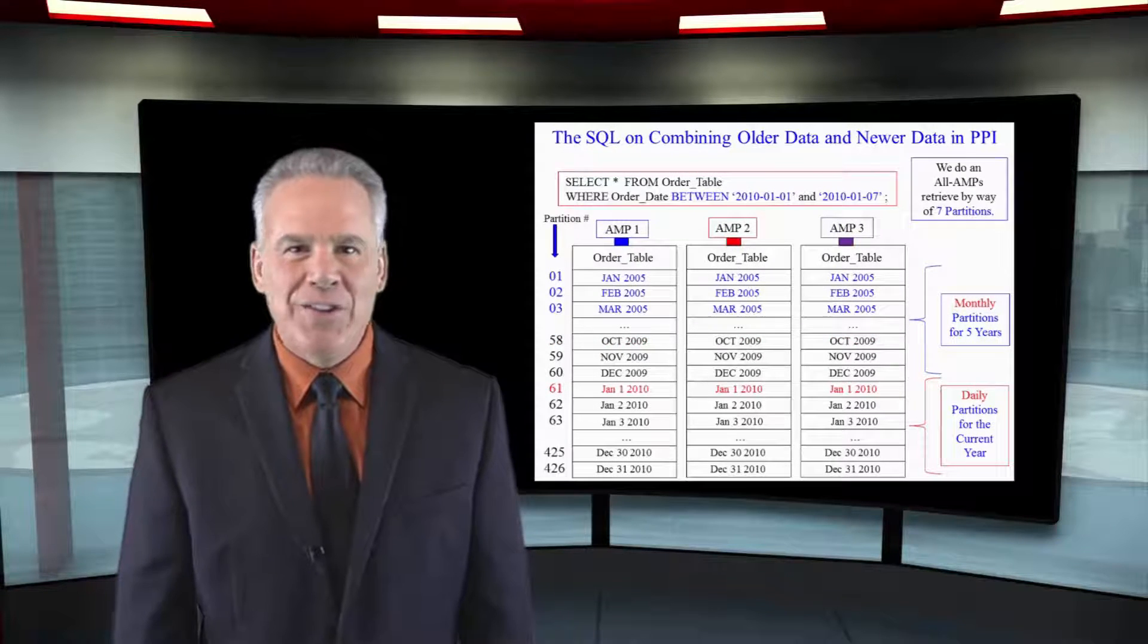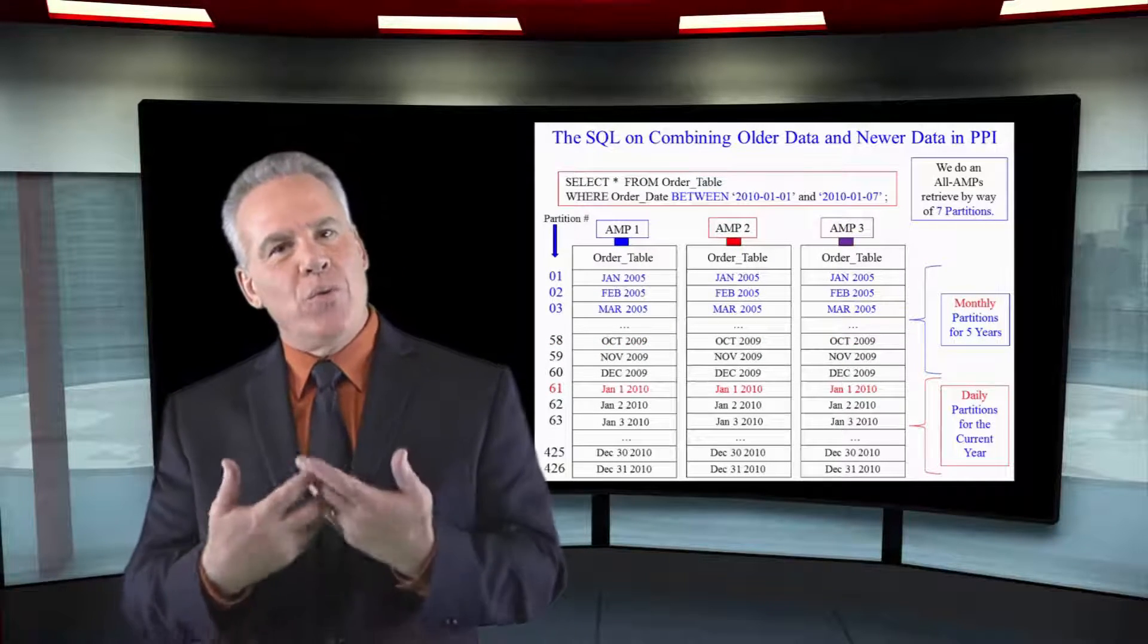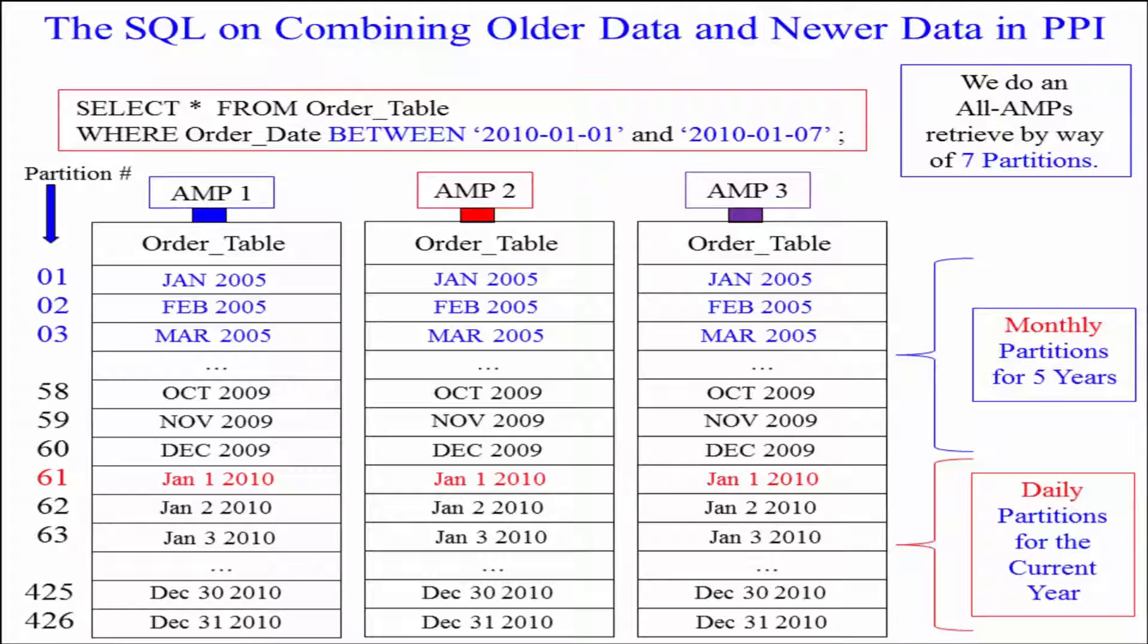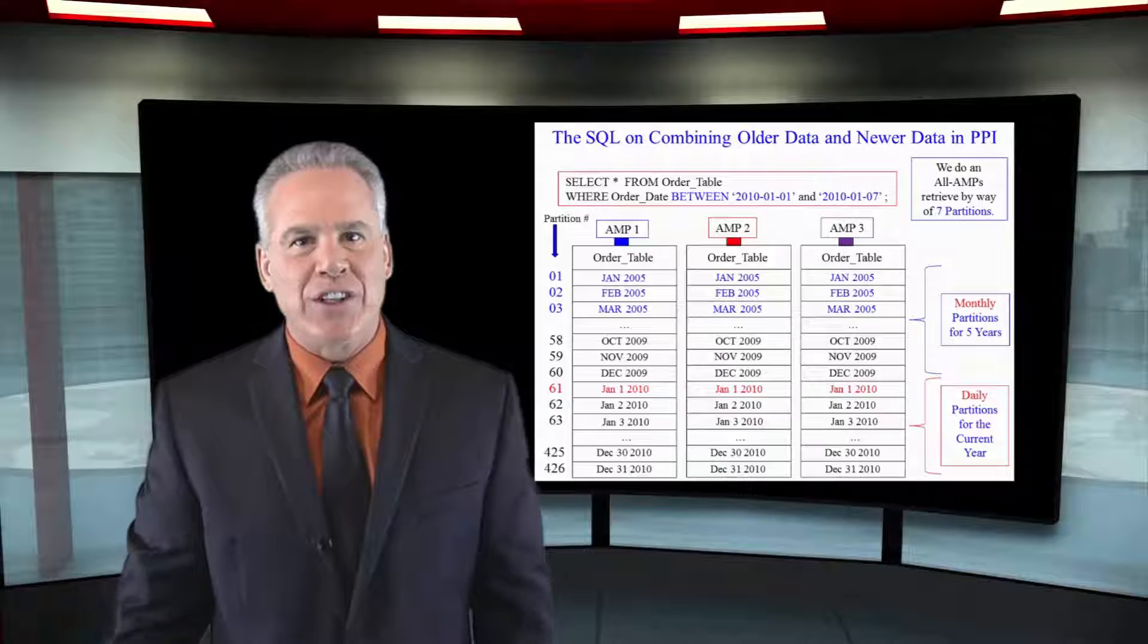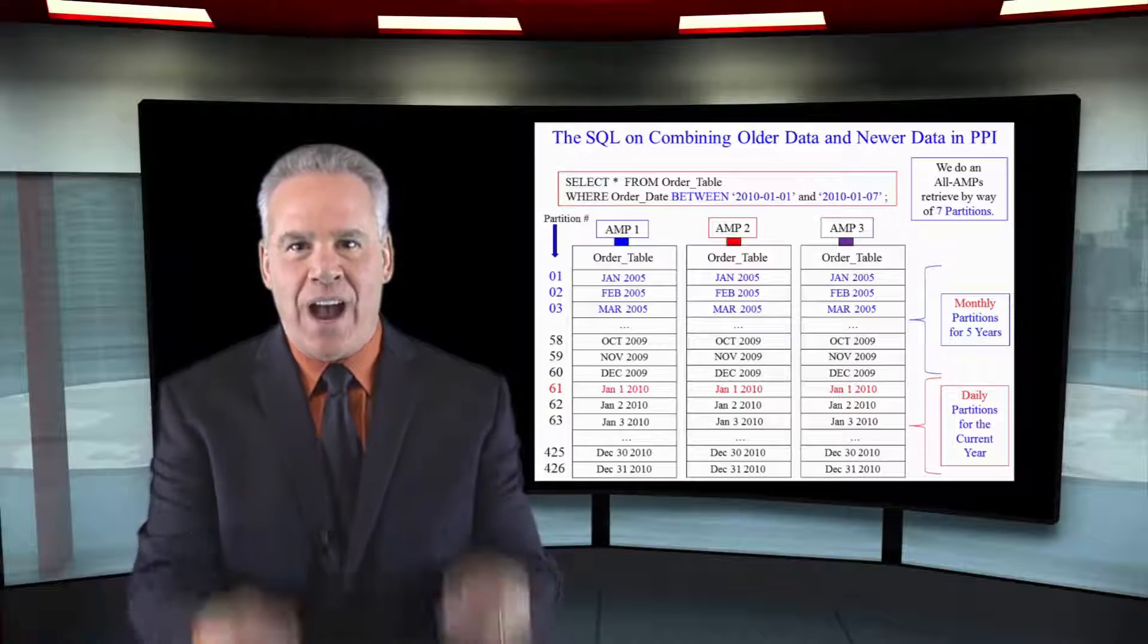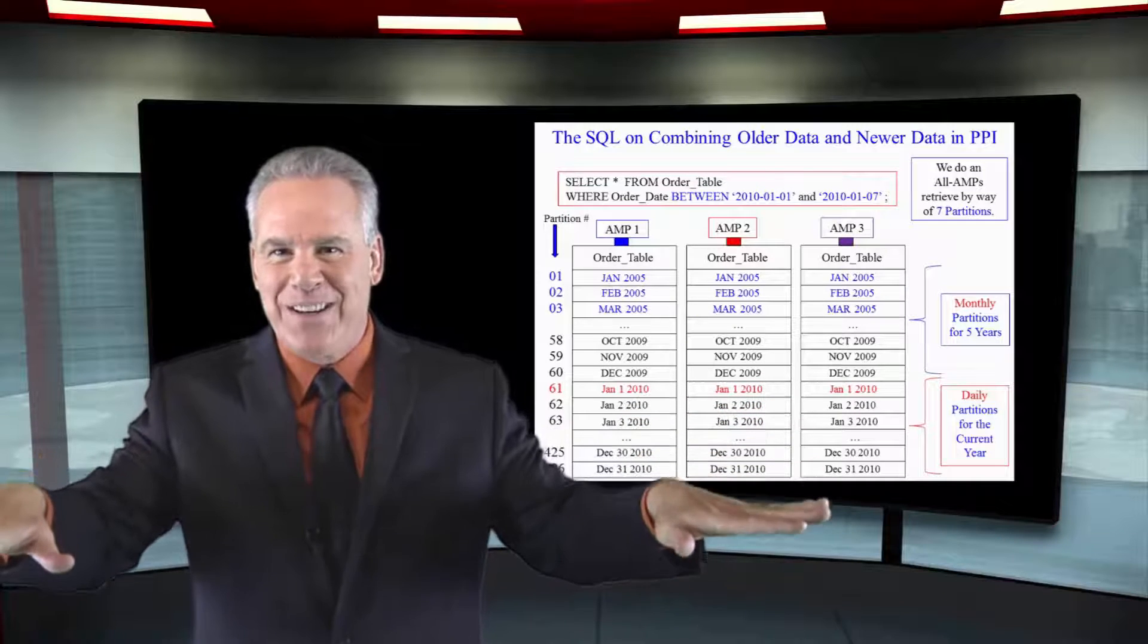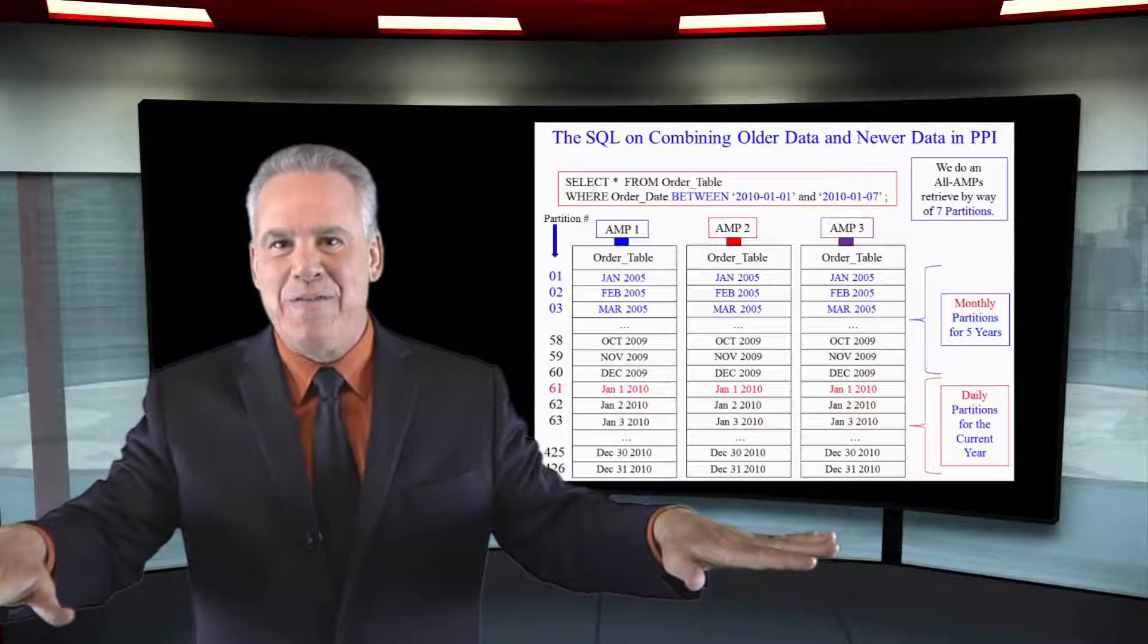The parsing engine knows all, so when you run a query that says select everything from the order table where the order date is between January 1, 2010 and January 7, 2010, the parsing engine knows that the 2010 data was per day, and it's actually going to do an all amps retrieve from seven partitions, and it's going to be very fast.